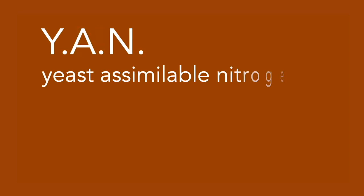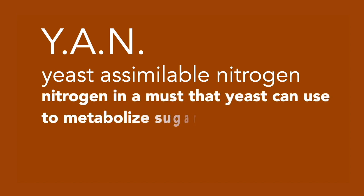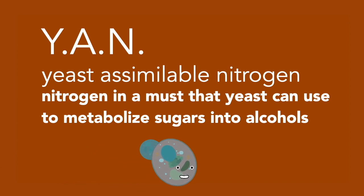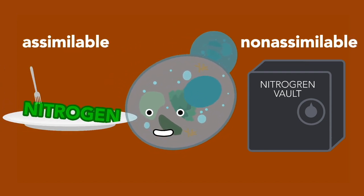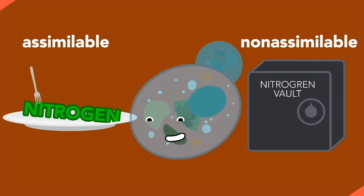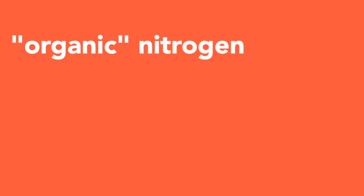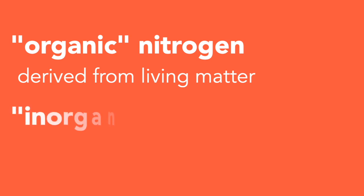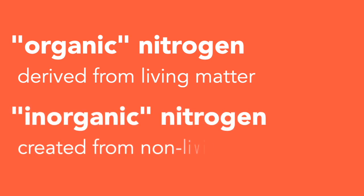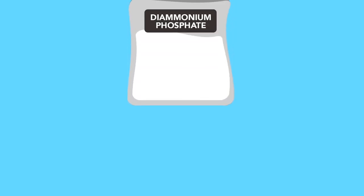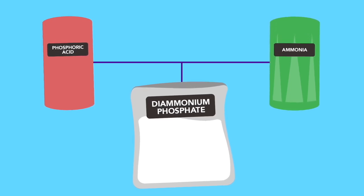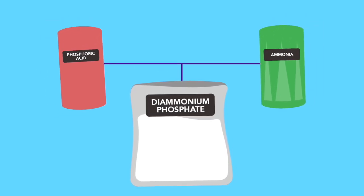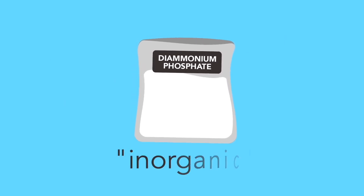What is YAN? YAN is an acronym for yeast-assimilable nitrogen. This refers to nitrogen in a must that yeast can use to metabolize sugars into alcohols. Just having nitrogen in there doesn't really help — it has to be assimilable by the yeast. This means that on the molecular level, it has to be in a form that the yeast can grab onto and consume. There are what are considered to be, by scientific language, organic sources — those derived from living matter — and inorganic sources, those created from other molecules. For example, DAP, or diammonium phosphate, is made from a reaction of phosphoric acid with ammonia, the result of which is a nitrogen source granulated for use in winemaking. But because it's not derived from living matter, scientifically it's not considered to be organic.